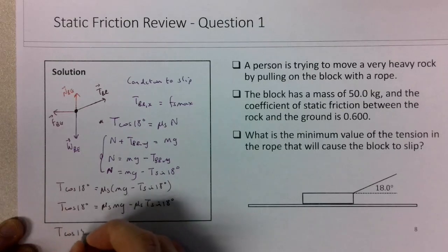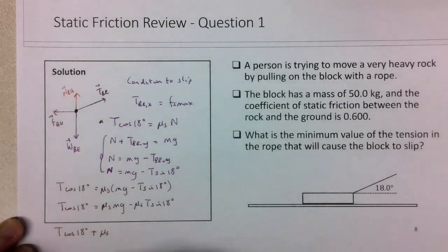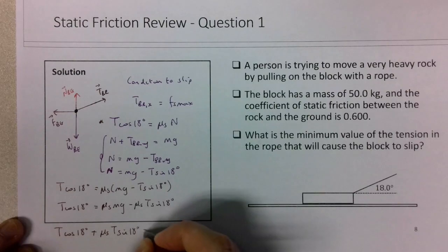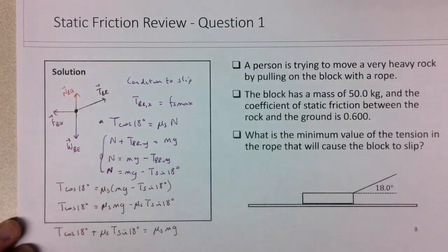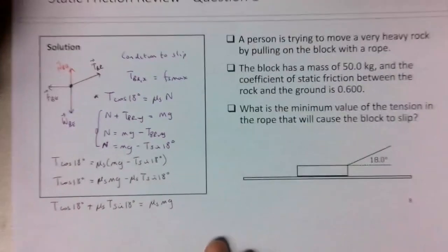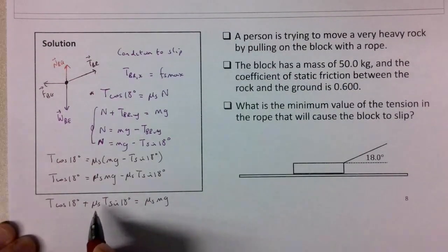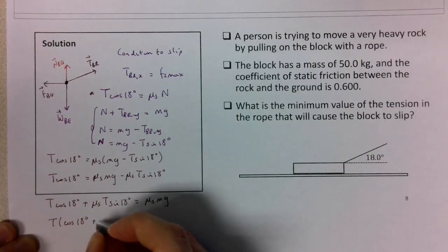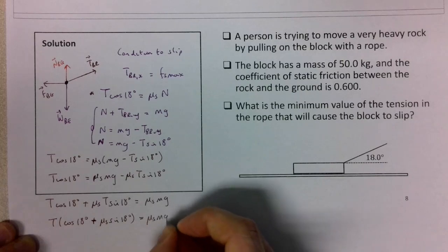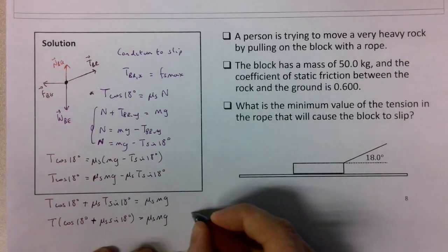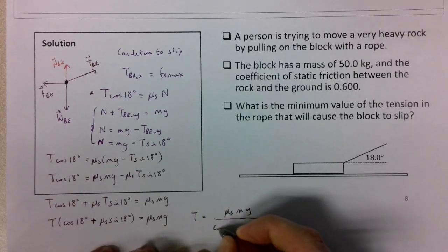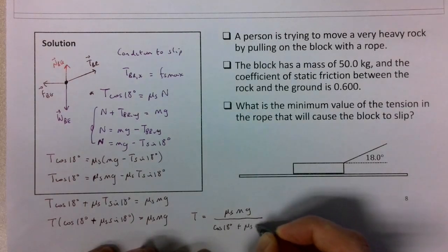So T cosine of 18 plus the μ_s, we're bringing across the equal sign, makes this a negative sign. μ_s T sine of 18 is equal to μ_s mg. And now I can take out the T term in this expression. So T parenthesis cosine of 18 plus μ_s sine of 18 equals μ_s mg. And the last step would be to do T is equal to μ_s mg, all divided by the cosine of 18 plus μ_s sine of 18.